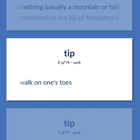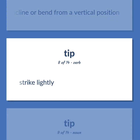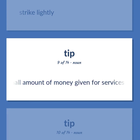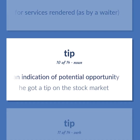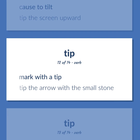Walk on one's toes. To incline or bend from a vertical position. Strike lightly. A relatively small amount of money given for services rendered, as by a waiter. An indication of potential opportunity. He got a tip on the stock market. Cause to tilt — tip the screen upward. Mark with a tip — tip the arrow with the small stone.